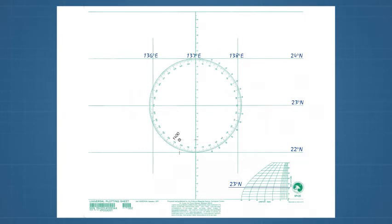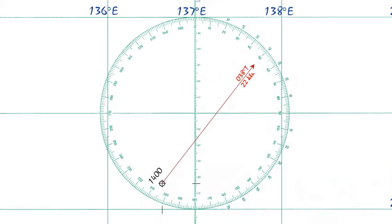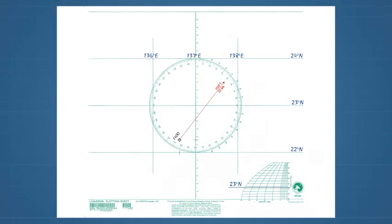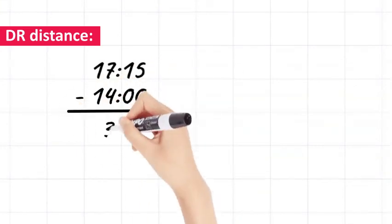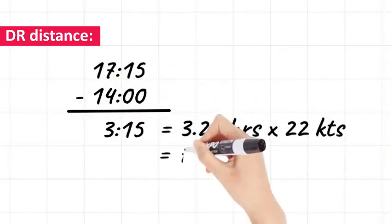Next, draw out a course of 038 degrees true from the 1400 position. Note, only numbers inside the graduation circle are used for directions. To get the distance to advance the DR position, multiply the time difference between 1715 and 1400 by a speed of 22 knots.